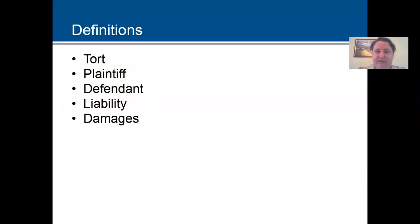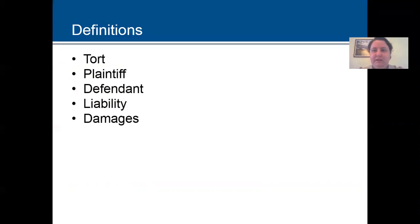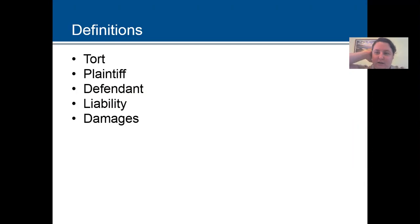Some definitions we really need to get on board with. A tort is a civil wrong one commits against another for which there's some remedy possible. It's a legal claim or complaint in the form of a lawsuit. The plaintiff is the injured party — they're the one asking the court to do something about it. The defendant is the accused. Liability is where you determine if the defendant was legally responsible for something that happened to the plaintiff, and the court makes that decision.